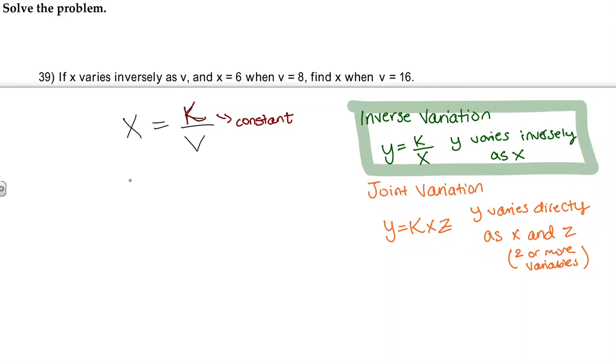So when x equals 6 and v equals 8 and we solve for k, k is going to keep being that number. So here to get k by itself, we multiply both sides by 8, canceling out the denominator on the right-hand side, and then on the left we have 48.